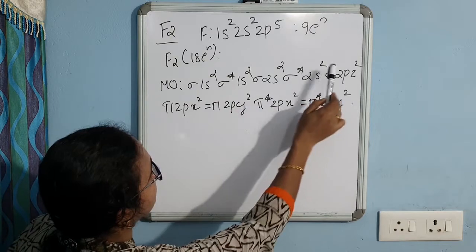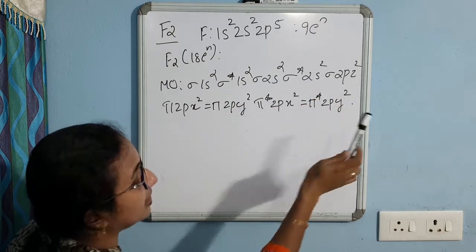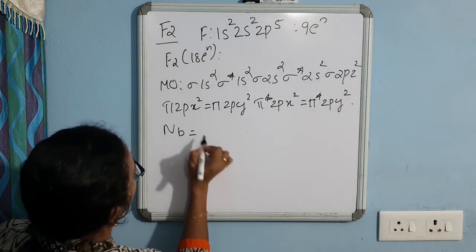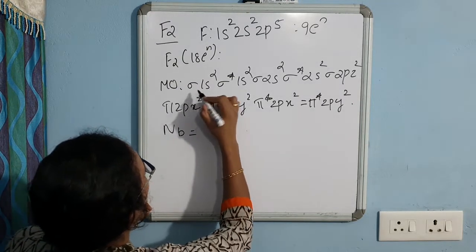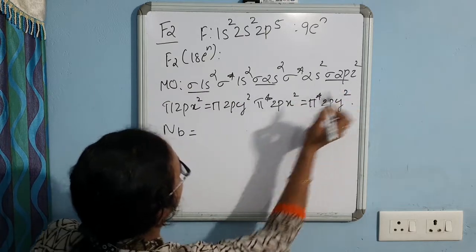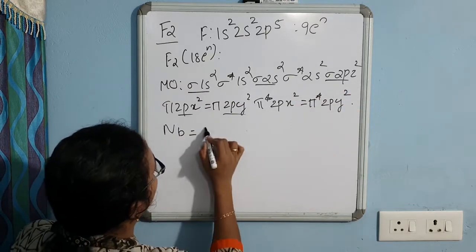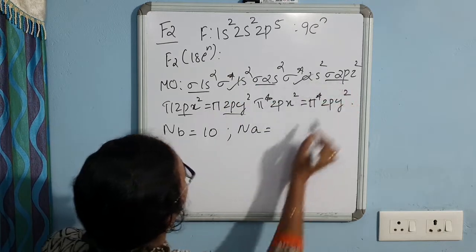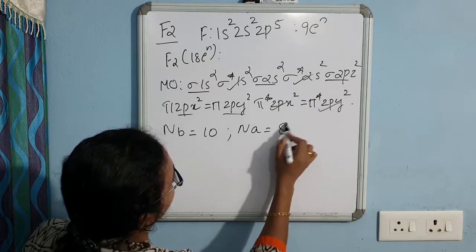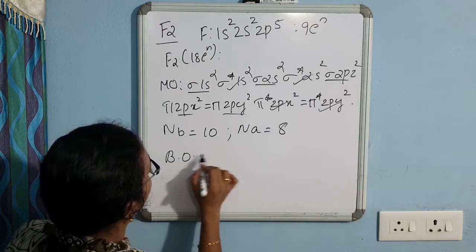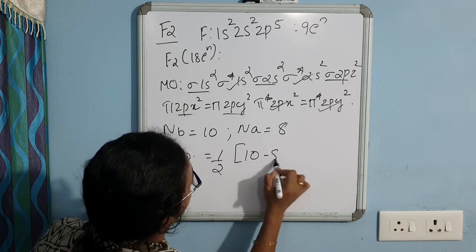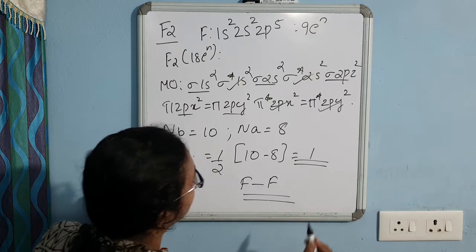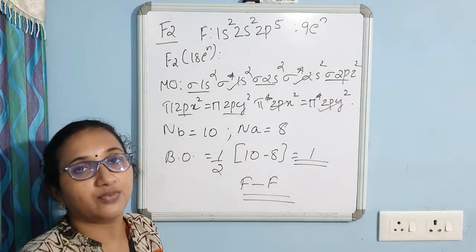Counting the electrons: 2, 4, 6, 8, 10, 12, 14, 16, 18 — all 18 electrons are accounted for. The number of electrons in bonding orbitals is 10, and the number of electrons in anti-bonding orbitals is 2, 4, 6, 8 — so 8. Bond order = ½ × (10 − 8) = 2/2 = 1. This means there is a single bond connecting the two fluorine atoms in the fluorine molecule.